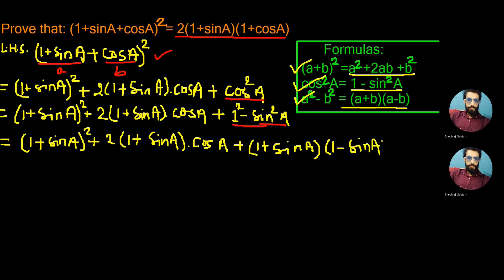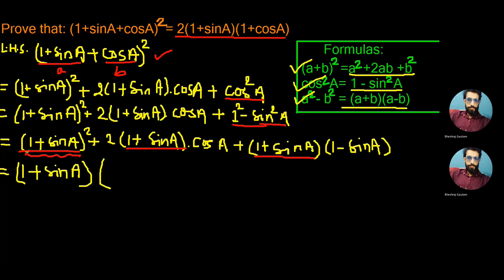Now if we carefully observe all three parts in this step, we see one plus sine A is common in all. So let's take that out as common and write one plus sine A outside one bracket. In the remaining bracket, we write one plus sine A from the first part, and from the second part, since one plus sine A has been taken out as common, there remains 2 cos A.